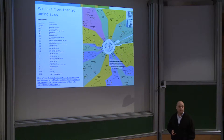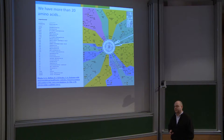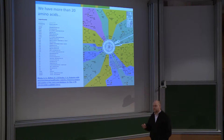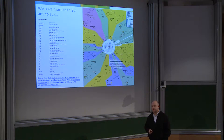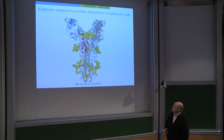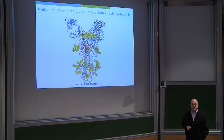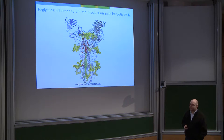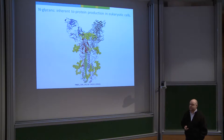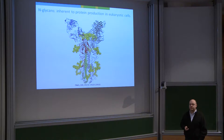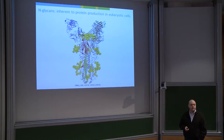Eukaryotic cells perform these modifications by nature, and our take is that we might as well use those natural modifications and re-engineer them to introduce particular functionality into therapeutic proteins. Glycans are not just tiny modifications on a protein. This is the crystal structure of influenza virus hemagglutinin, and whatever you see in yellow is N-linked carbohydrate, which covers large areas of the protein surface. This is the immunodominant antigen in the influenza vaccines we use today.